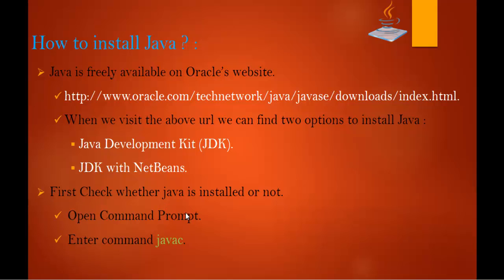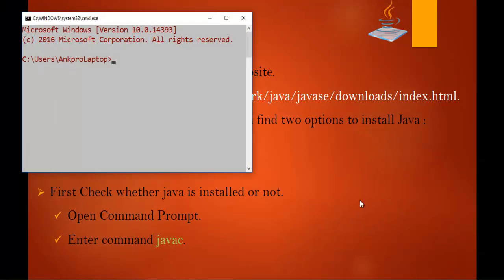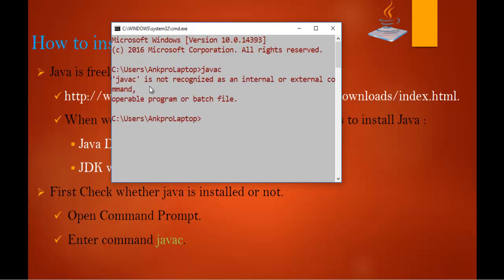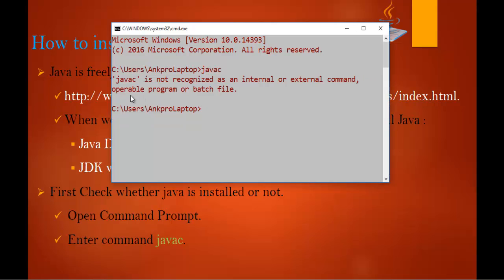How do you check it? It's very simple. First we have to open the command prompt, then we have to enter the command 'javac'. I'll press Windows+R to get the run dialog, enter 'cmd' to open the command prompt. Here I'll type the command 'javac' and when I hit Enter it tells me: 'javac is not recognized as an internal or external command'.